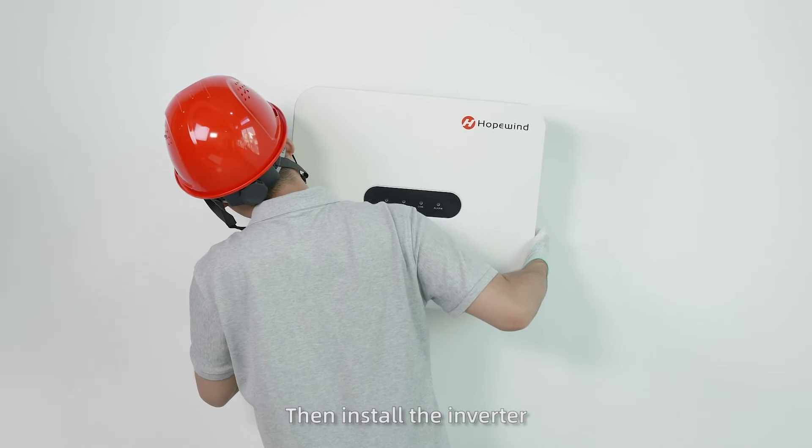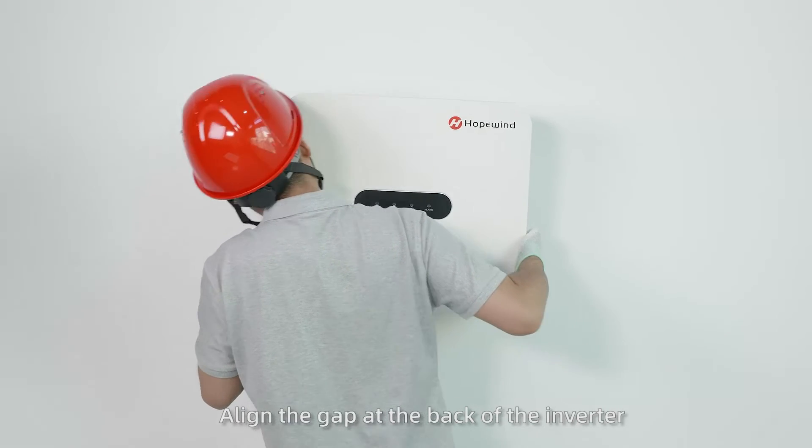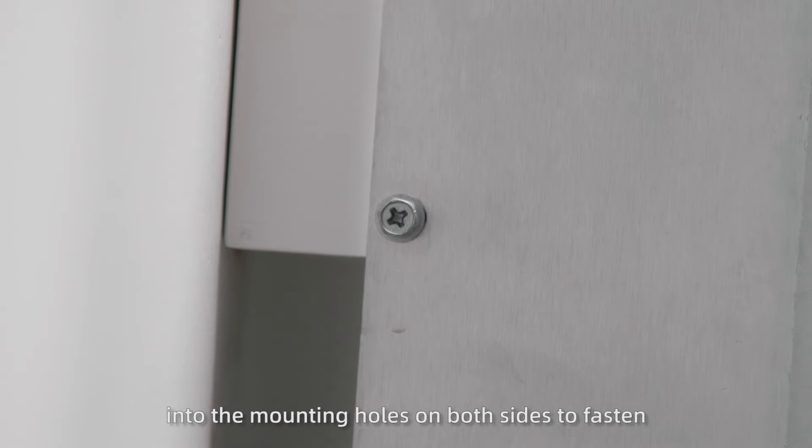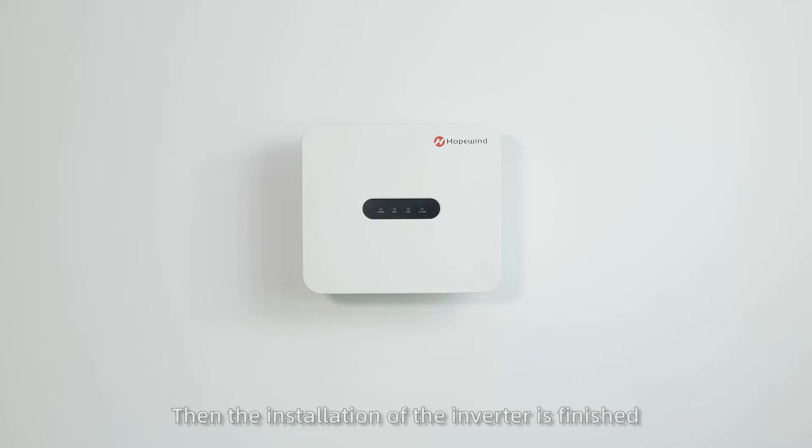Then install the inverter. Align the gap at the back of the inverter with the top of the mounting plate and clip it in. Then insert the fixing screws in the accessories into the mounting holes on both sides to fasten.